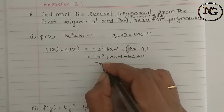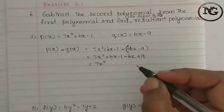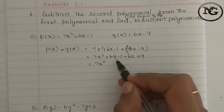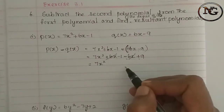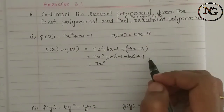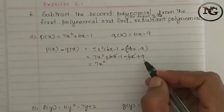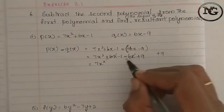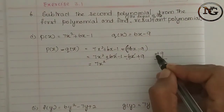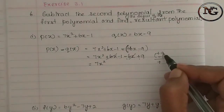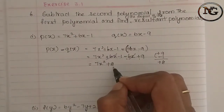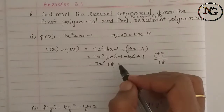Next, the x squared term stays. You have plus 6x minus 6x; plus 6 minus 6x is 0. That means plus 6x minus 6x is 0. Then here is plus 9 minus 1; the bigger number symbol is plus. 9 minus 1 is 8, so plus 8. This is the resultant polynomial.